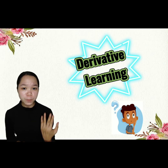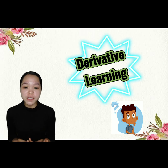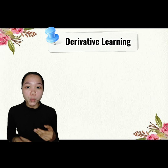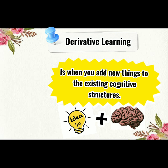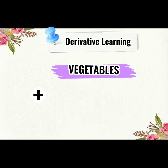What do we mean by derivative learning? Let us first define it. Derivative learning is when you add new things to the existing cognitive structures. Let's take this as an example: suppose you are acquainted with the concept of vegetables like lettuce, cabbage,